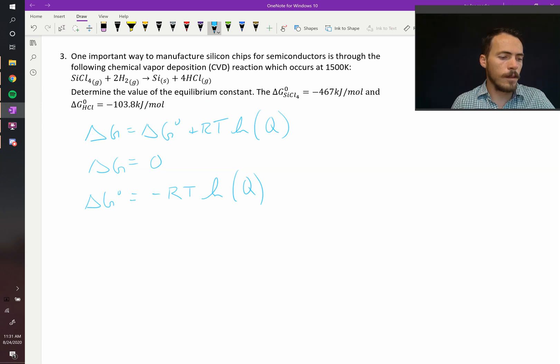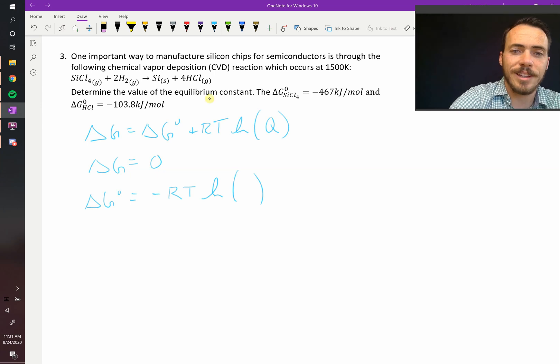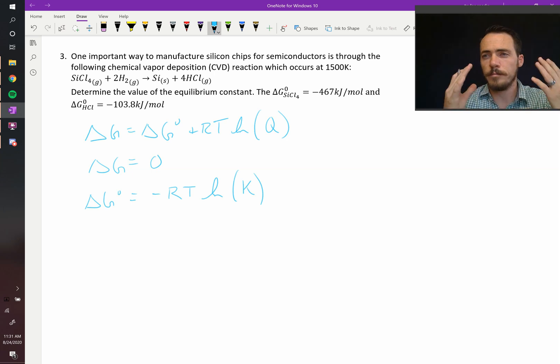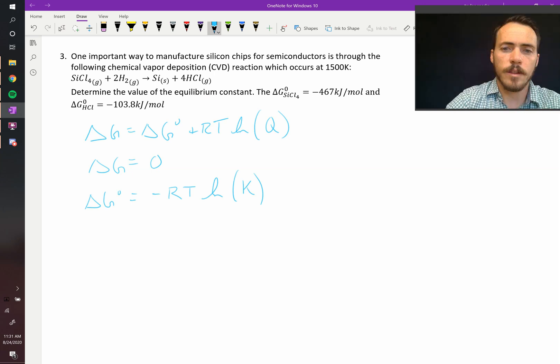Therefore, we can solve for, and since it's at equilibrium, we no longer call it Q. We call it K. So now we could solve for K. We would say that K, the equilibrium constant, is going to be equal to the exponential of negative delta G naught over RT.